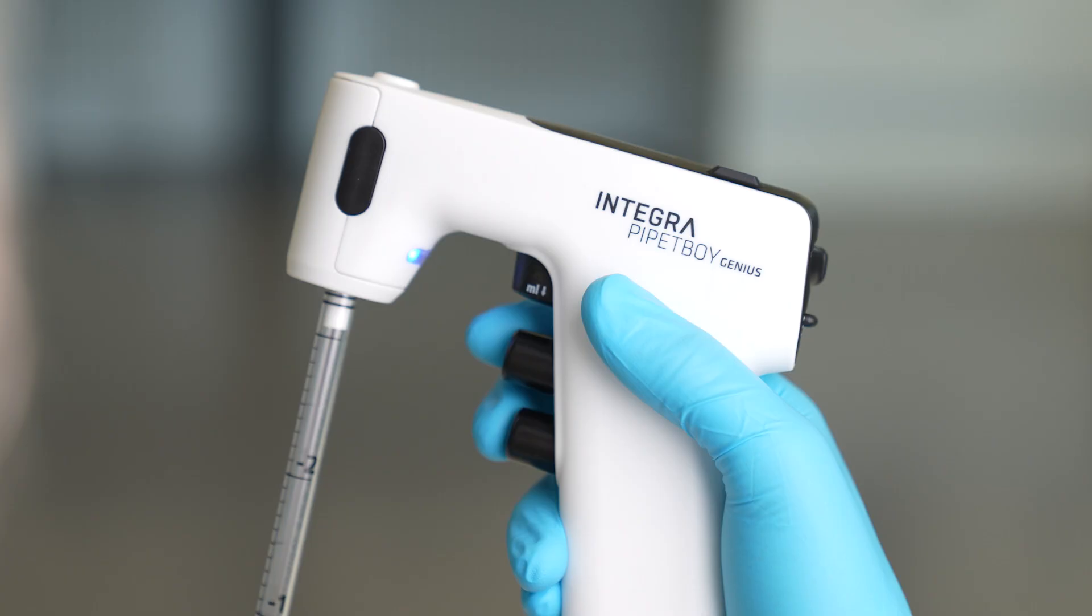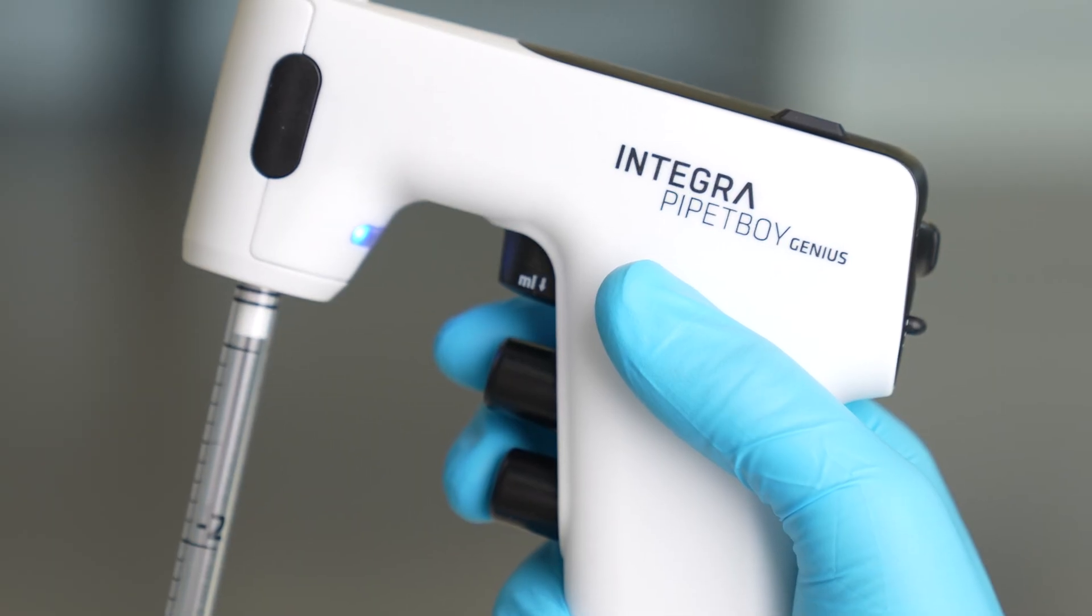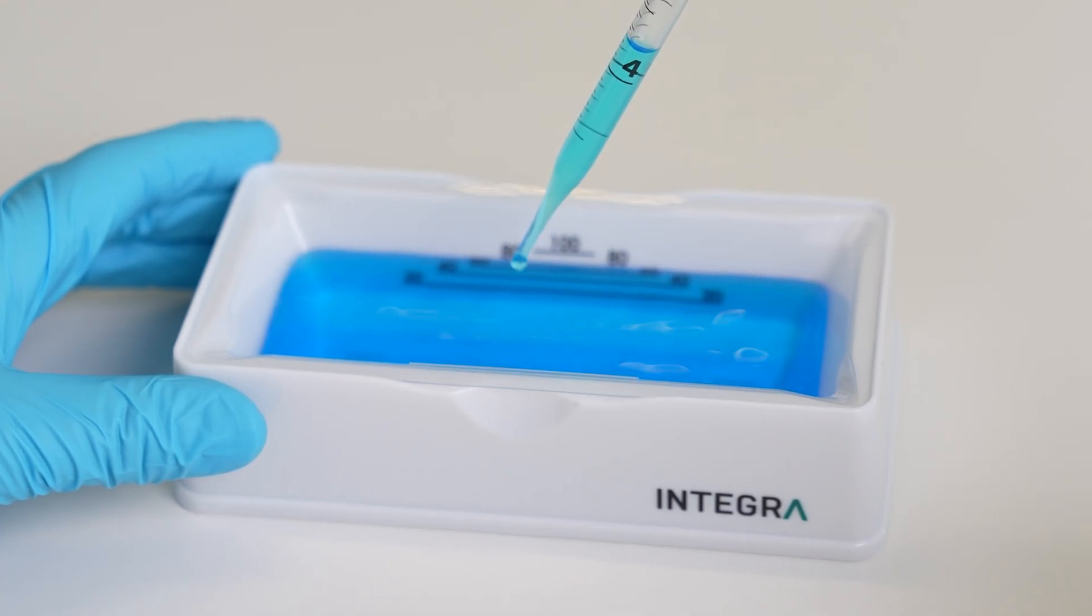You can then regulate the speed by varying the pressure applied to the aspirate and dispense buttons. The harder you press, the faster the liquid transfer, up to the defined maximum speed. A gentle press allows you to dispense drop by drop until the last drop.